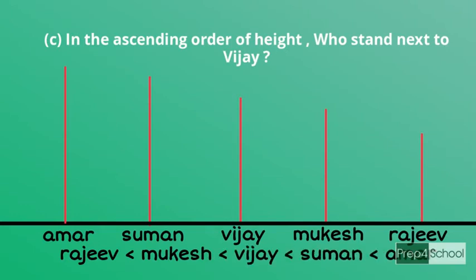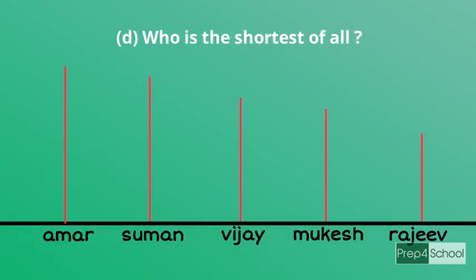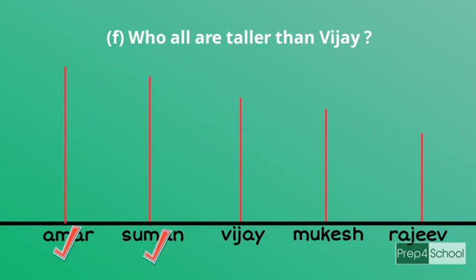So the person who stands next to Vijay in ascending order is Suman. Question four: who is the shortest of all? From the diagram, the shortest is Rajiv and the tallest is Amar. Question five: who are all taller than Vijay? Amar and Suman are taller than Vijay, while Mukesh and Rajiv are shorter than Vijay.